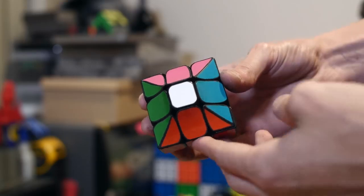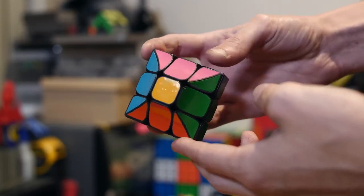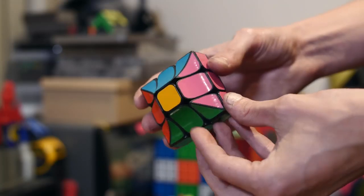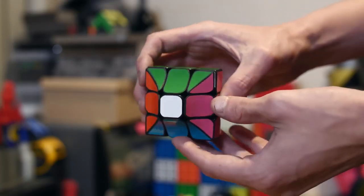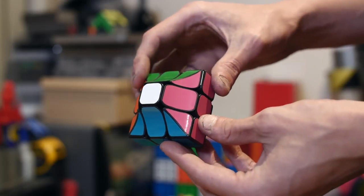Ta-da! Everything stickered up. And this is what the puzzle looks like. Now, you're probably wondering by looking at this, what's the point of the yellow and white centerpieces? And ta-da!